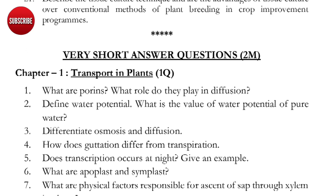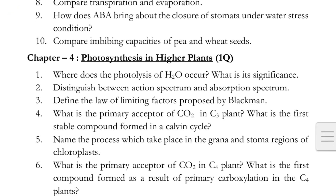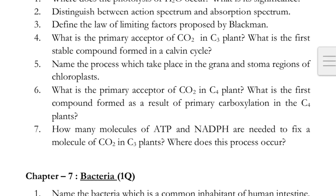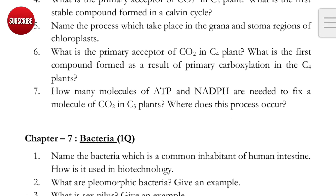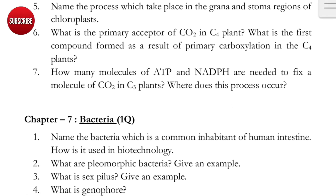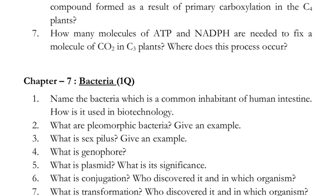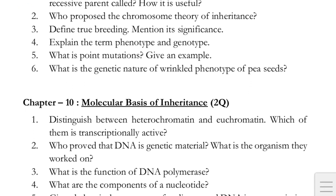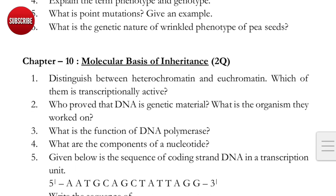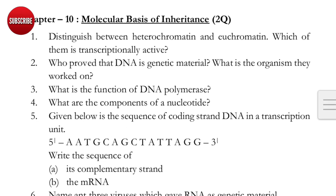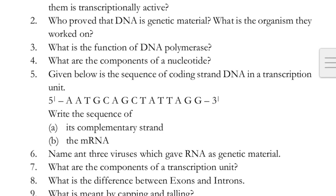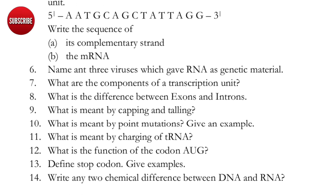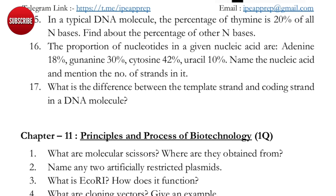Very short answer questions are chapter-wise. There are 10 questions and you can choose 2-mark questions for the final exam. You will get this paper posted in the Telegram link as a PDF. You can score 100 percent, or at least 95 percent.